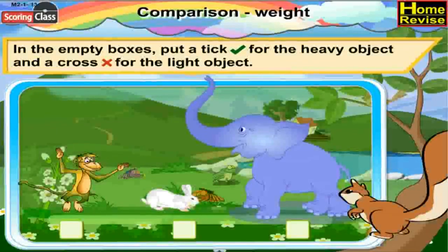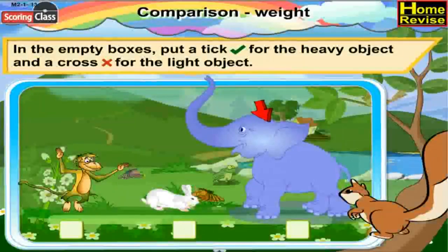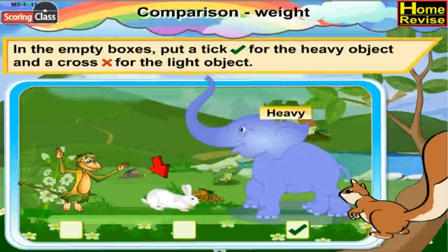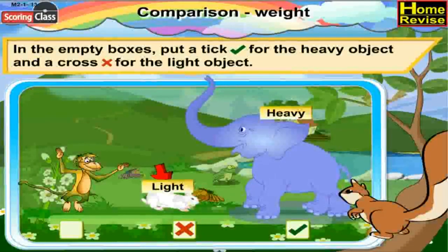Here there are three animals. Among these, the elephant is heavy, so put a tick for the elephant, and the poor little rabbit is light, so put a cross for the rabbit.